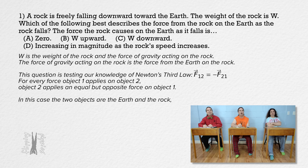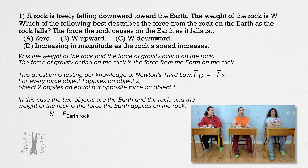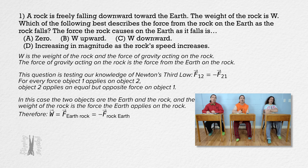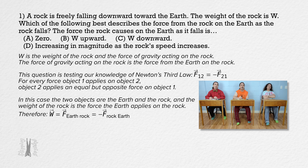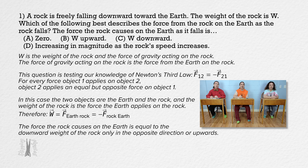In this problem, the two objects are the earth and the rock, and the weight of the rock is the force the earth applies on the rock, which is equal but opposite to the force the rock applies on the earth. In other words, the force the rock causes on the earth is equal to the downward weight of the rock, only in the opposite direction — upwards. That means the correct answer is choice B.